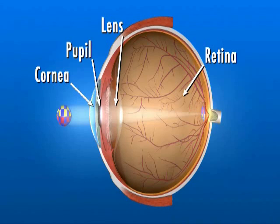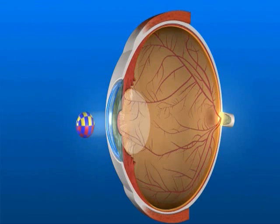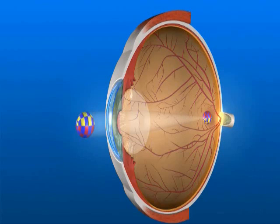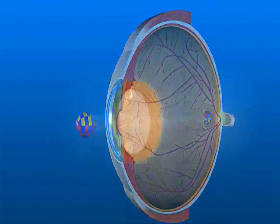70% of the eye's focusing power comes from the cornea and 30% from the lens. In the healthy eye, the lens is clear and allows light rays to pass through unobstructed.